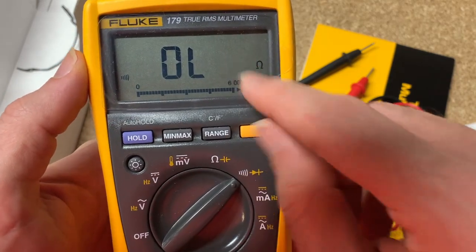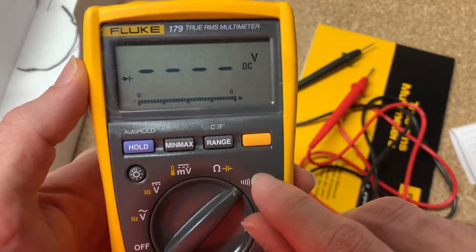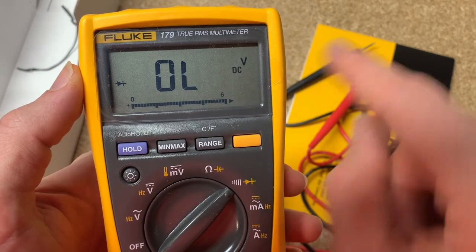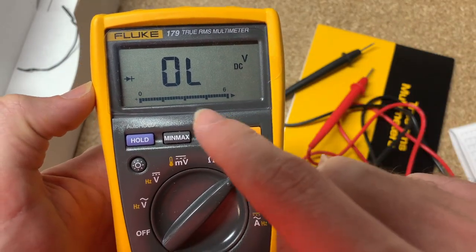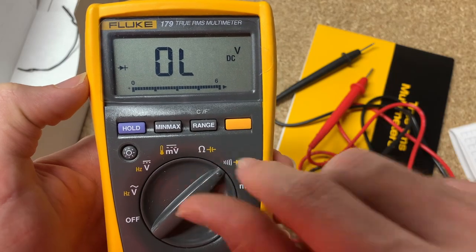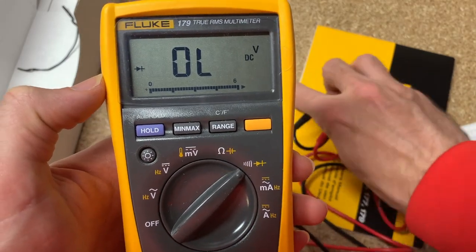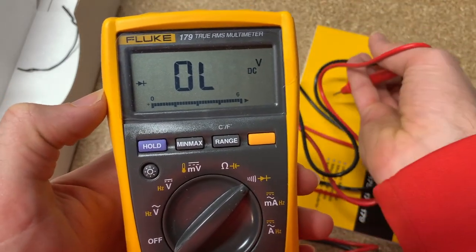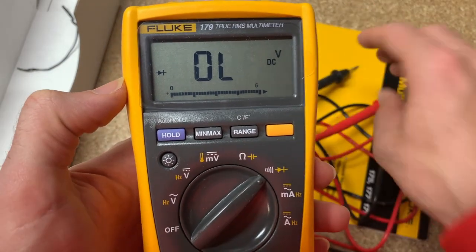Diode check. This is like a diode is kind of like a one-way valve. So it lets electricity flow one direction, but not the other. So you hook up the leads, one way you should get a reading, continuity reading. The other way you don't if the diode is good.